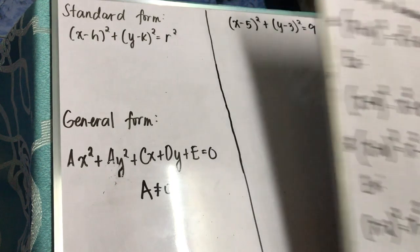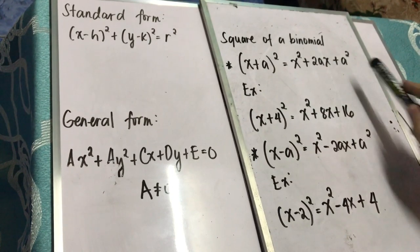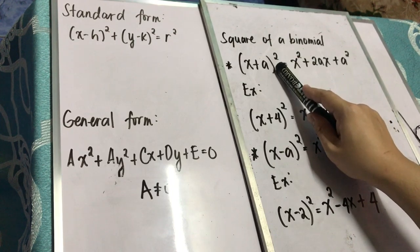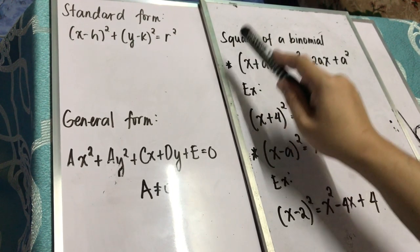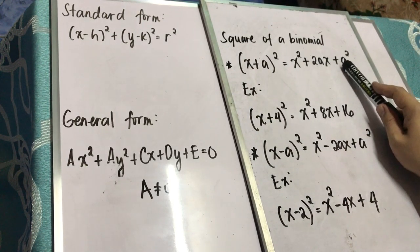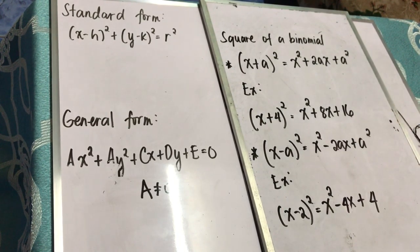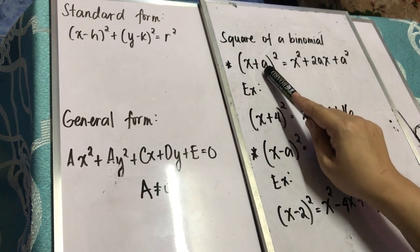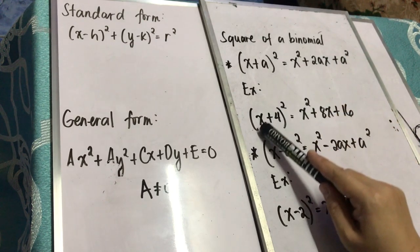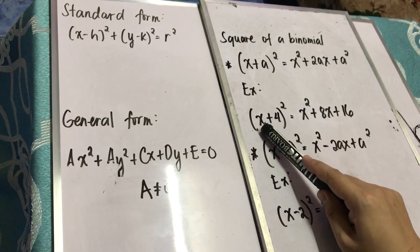This format is actually a square of a binomial. Let's have a review on getting the product of a square of a binomial. If you have an expression, the quantity of x plus a squared, the product of x plus a times x plus a is equivalent to x squared plus 2ax plus a squared. What I did is I take the square of the first term, then for the second term, I multiplied the first term and the second term by a constant 2, then take the square of the second term.